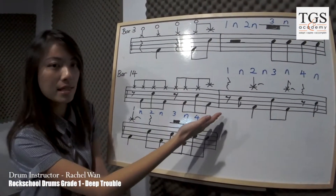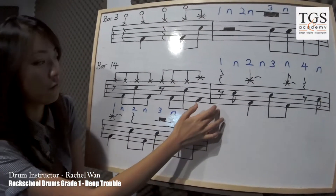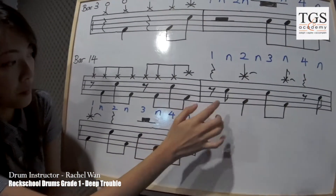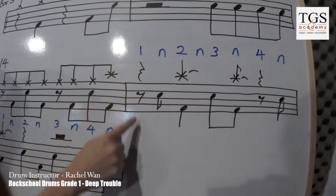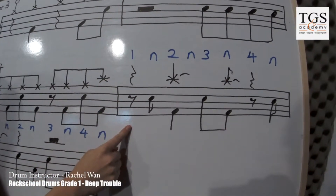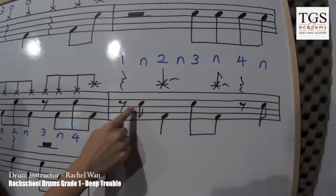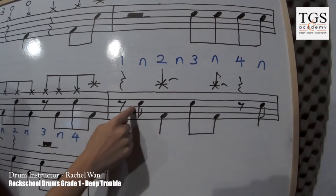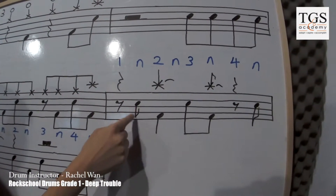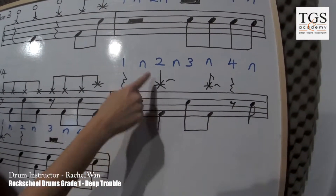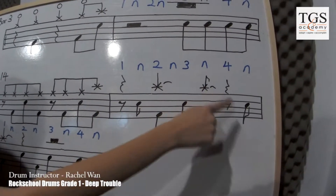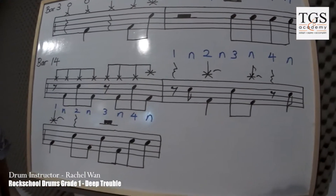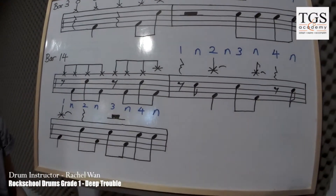Let's take a look at Bar 15. There's an 8th note rest at count number 1. Then it goes with the snare drums — the 8th note, then the quarter note, then snare again. It's the same pattern repeated. I'll demonstrate for you.